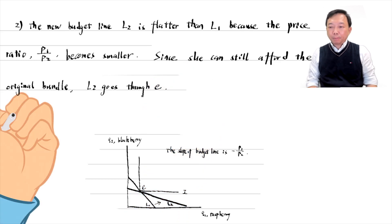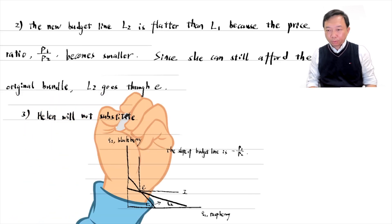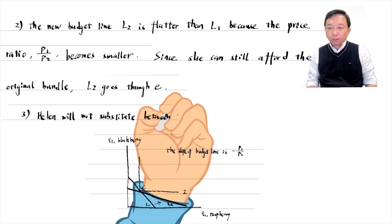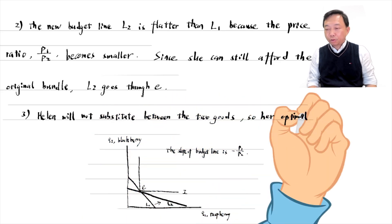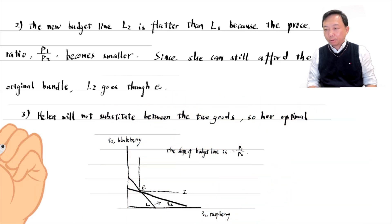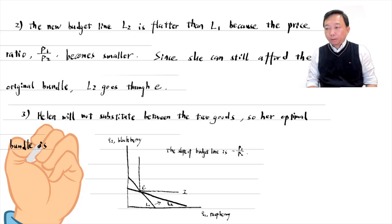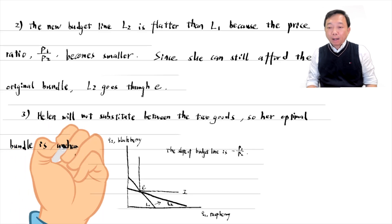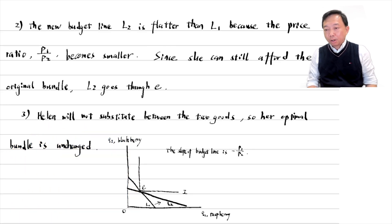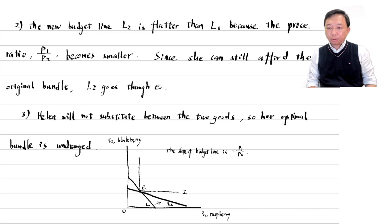In the third step, we consider Helen's optimal choice. Helen will not substitute between the two goods, so her optimal bundle is unchanged, as shown in the graph. The optimal bundle E is still the point where her highest indifference curve touches the budget constraint.